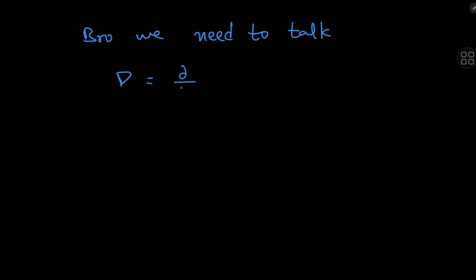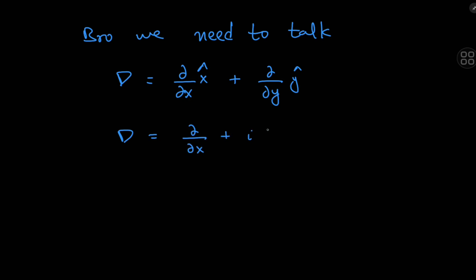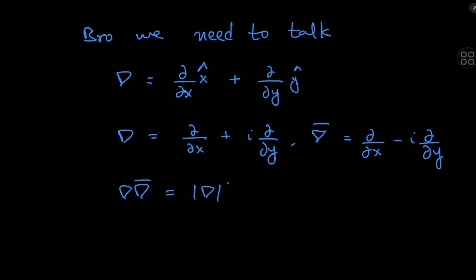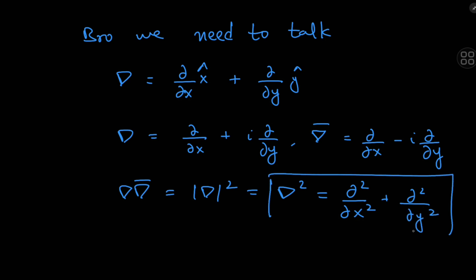Recall the del operator defined as partial by partial x, x-hat, plus partial by partial y, y-hat in the two-dimensional case. There's a very nice way to define its counterpart in the complex realm: del as partial by partial x plus i times partial by partial y. We can define a conjugate operator del-bar as partial by partial x minus i times partial by partial y. The product of these two operators gives us del-squared, which equals partial-squared by partial x-squared plus partial-squared by partial y-squared — the familiar Laplacian operator.